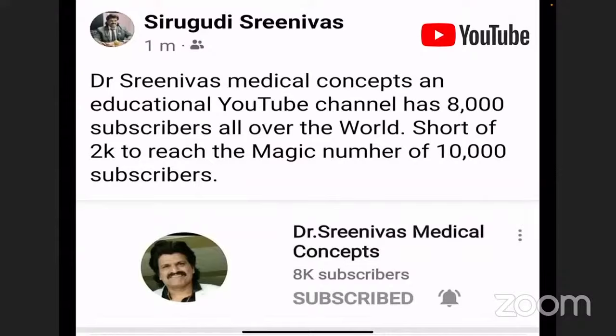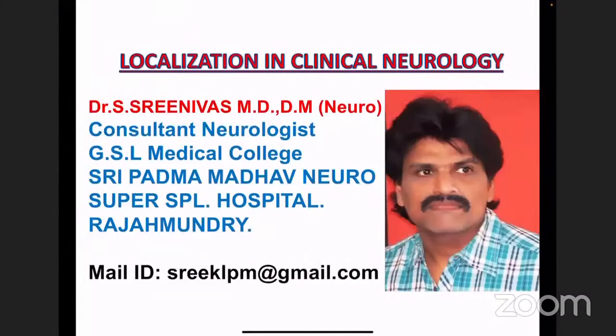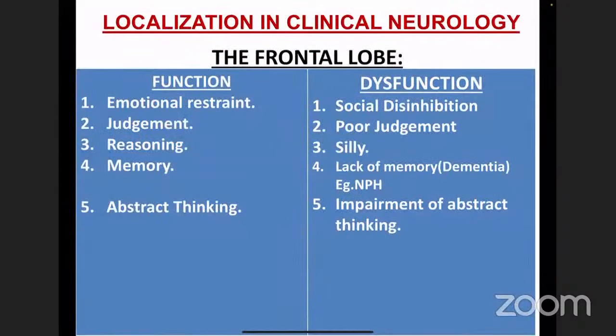Today I'm going to give a gist of the localization of neurology. I need about an hour of your patience and attention to give a good overview of localization in clinical neurology. This will be very useful for MBBS final year students, MD general medicine exam candidates, MD postgraduate students, and as a refresher for DM neurology students. We'll go step by step — starting with lobes, then thalamus, cranial nerves, peripheral nerve, neuromuscular junction, and muscle.